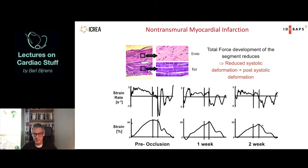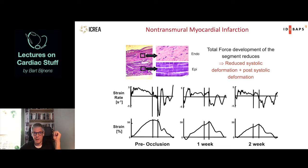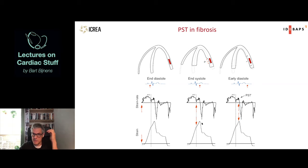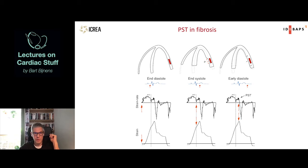You get post-systolic deformation again - a very similar substrate to acute hypoperfusion, but now because you've lost half of your myocardium rather than active hypoperfusion. Wherever you lose myocardial cells you get this pattern - as shown also in genetic cardiomyopathies where localized fibrosis causes decreased overall force development and post-systolic deformation. Post-systolic deformation is therefore very sensitive for changes but not specific for any one kind of underlying substrate or etiology.